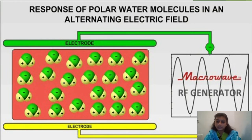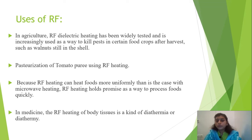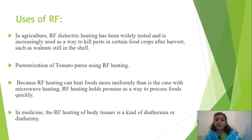Uniform heating is a major advantage of RF. Uses of RF include agriculture, where RF dielectric heating has been widely tested and increasingly used to kill pests. Pasteurization of tomato puree also uses RF heating, because RF can heat foods more uniformly than microwave heating. In medicine, RF heating of body tissues is a kind of diathermy.